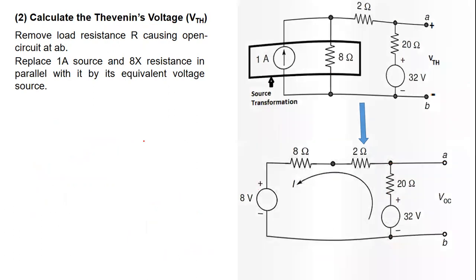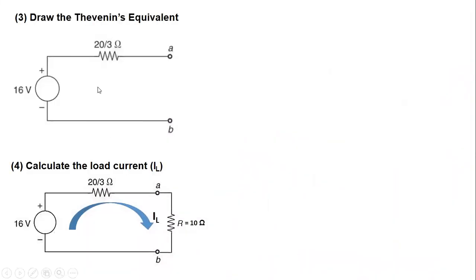The third thing that we will do is draw the Thévenin equivalent. Thévenin equivalent is drawn by taking VTH and then this is RTH across the load terminal. This is the Thévenin equivalent of the given circuit.